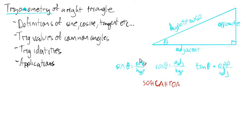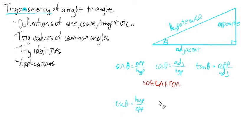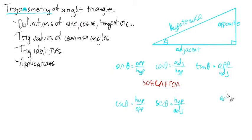Those aren't all the ratios we can make — we can take each of these combinations and flip them over. If we flip sine over and do hypotenuse over opposite, this is called the cosecant. Taking hypotenuse over adjacent gives us the secant of angle theta. And taking adjacent over opposite gives us the cotangent of angle theta.